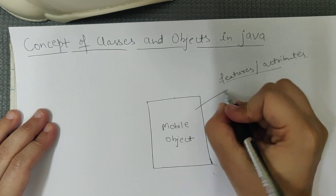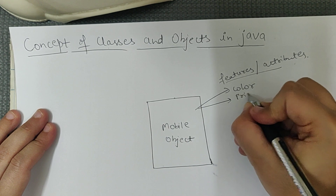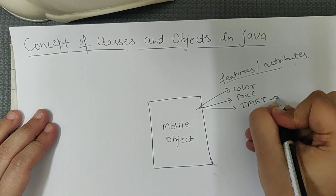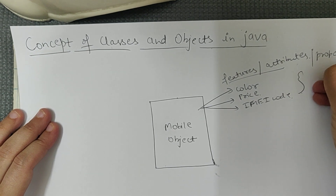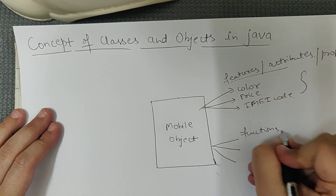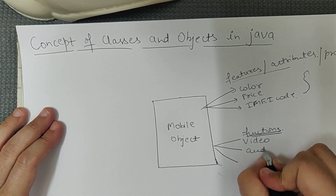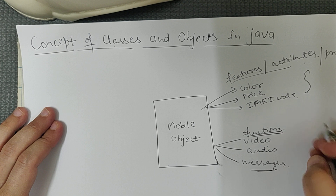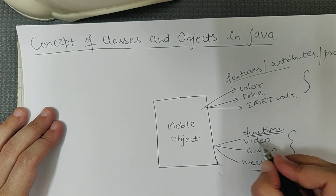The features of a mobile include its color, its price, and its IMEI code. These are some features, attributes, or properties. In addition to features, there are functions inside a mobile — for example, video can be played, audio can be played, and messages can also be performed. These are some functions of the mobile object.